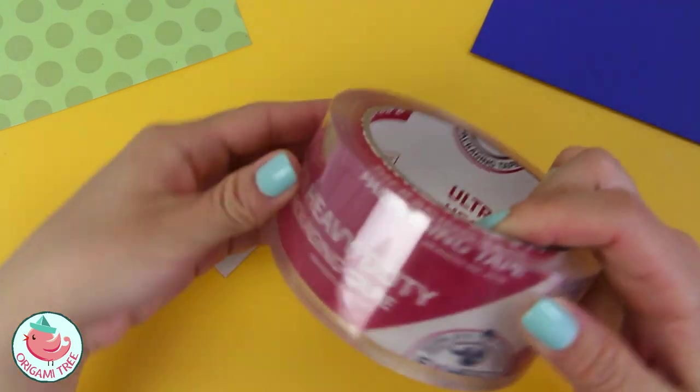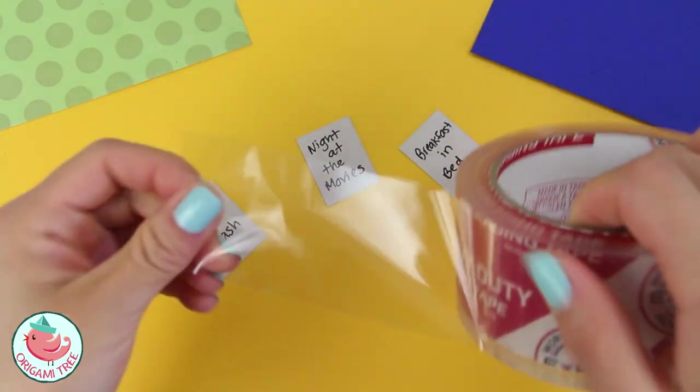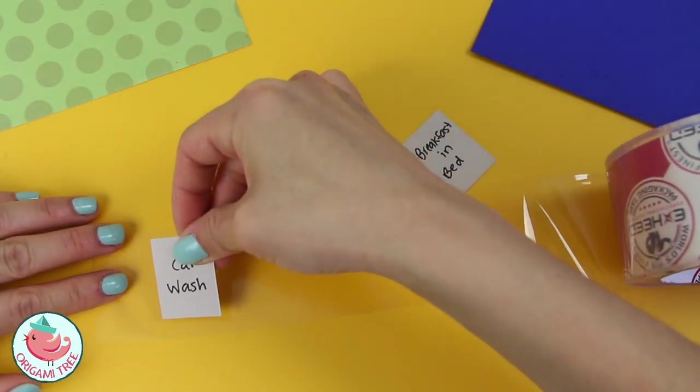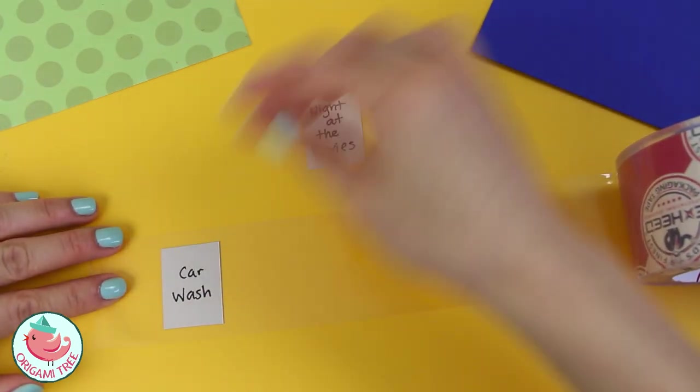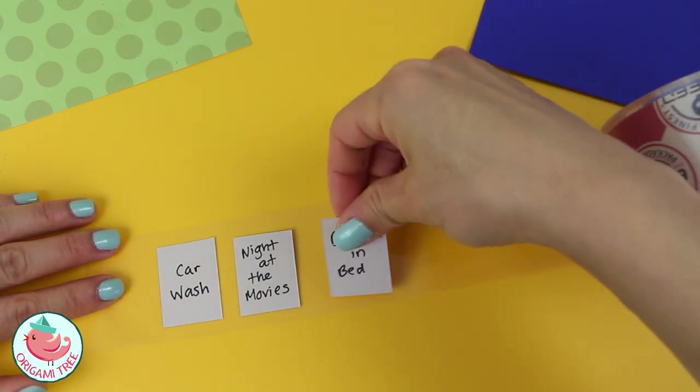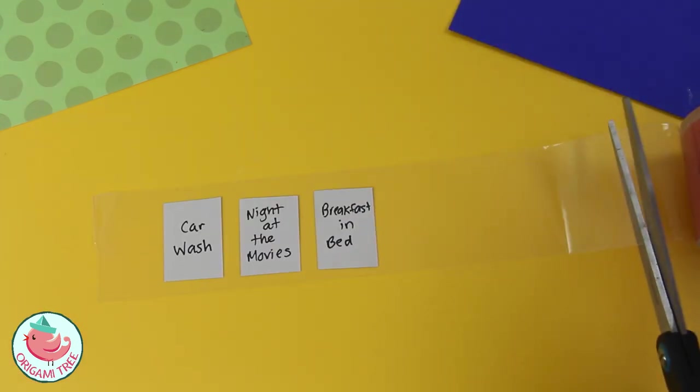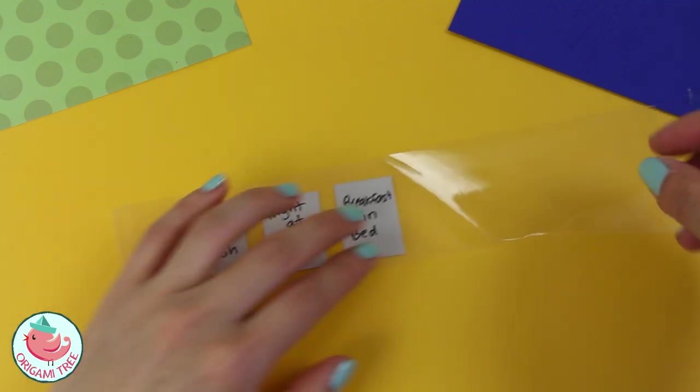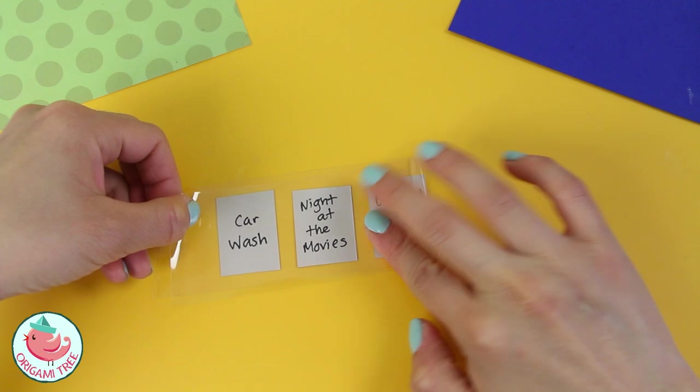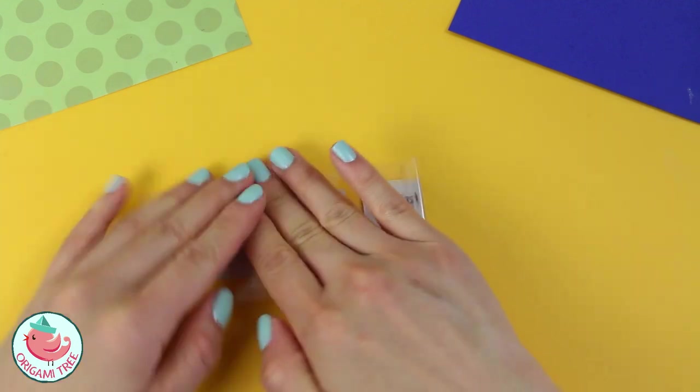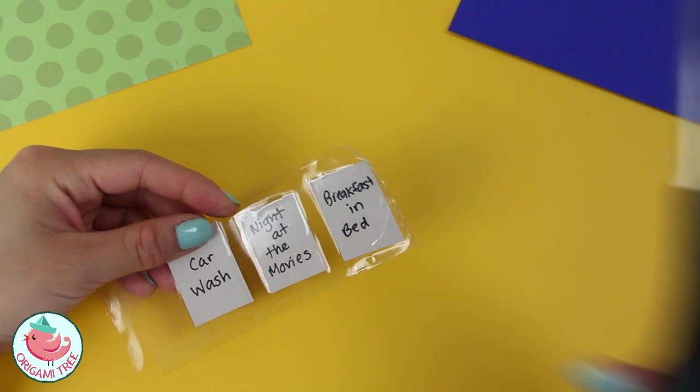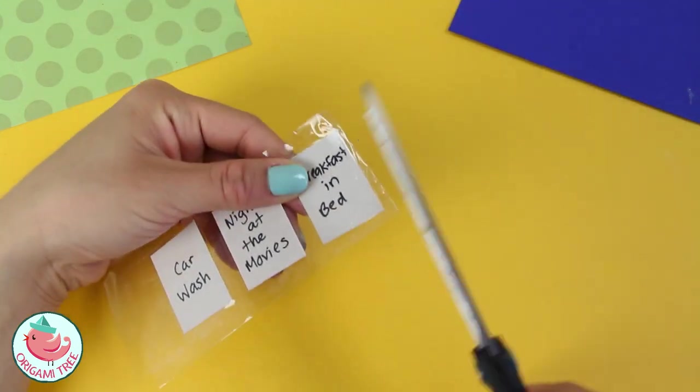After that, I'm going to take my clear tape and laminate them front and back. After that, you want to take your pair of scissors and trim off the edges.